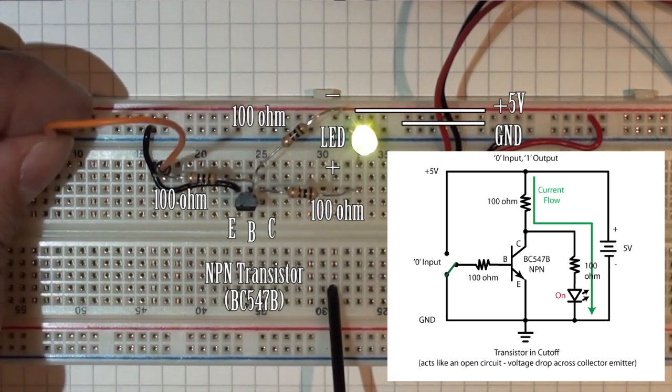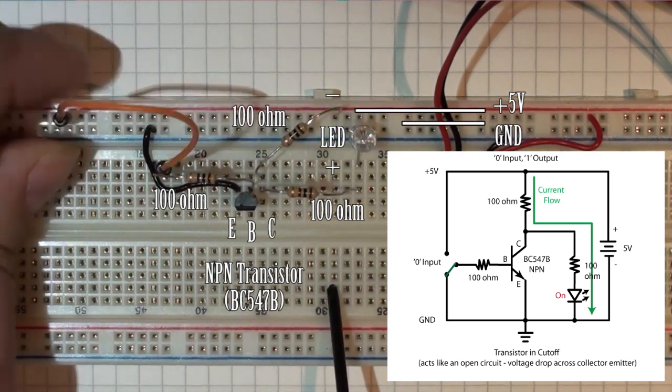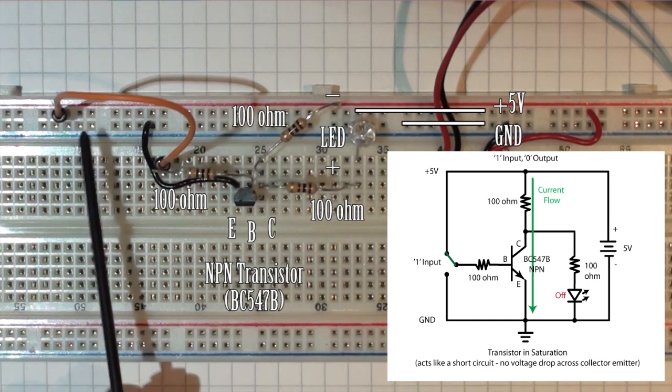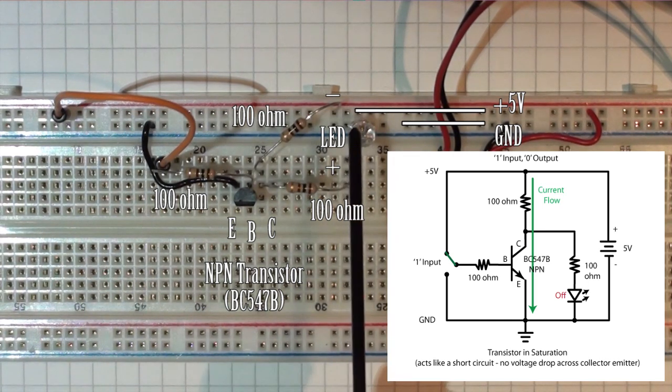When we move the switch wire from ground to plus five volts, the LED goes off, giving us an output of zero for an input of one.